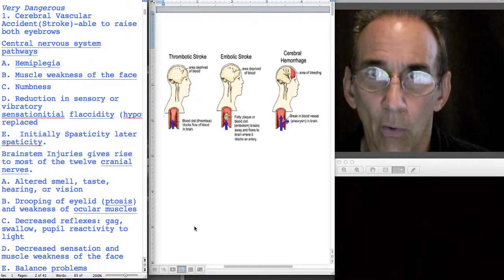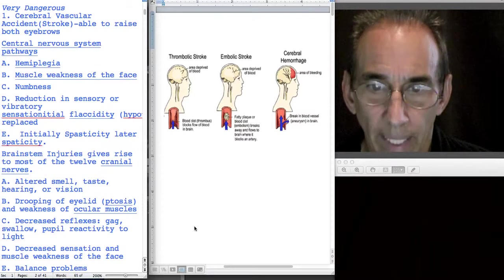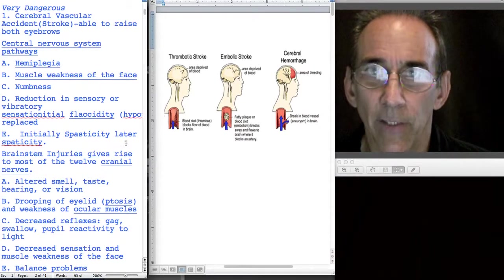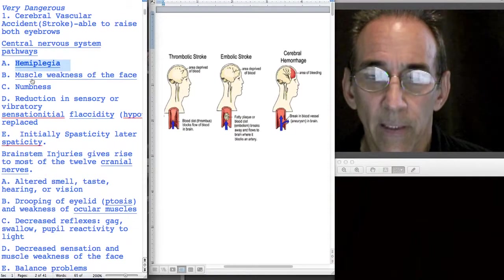With a stroke, people will often have things like hemiplegia, that means one side of their body is weak.